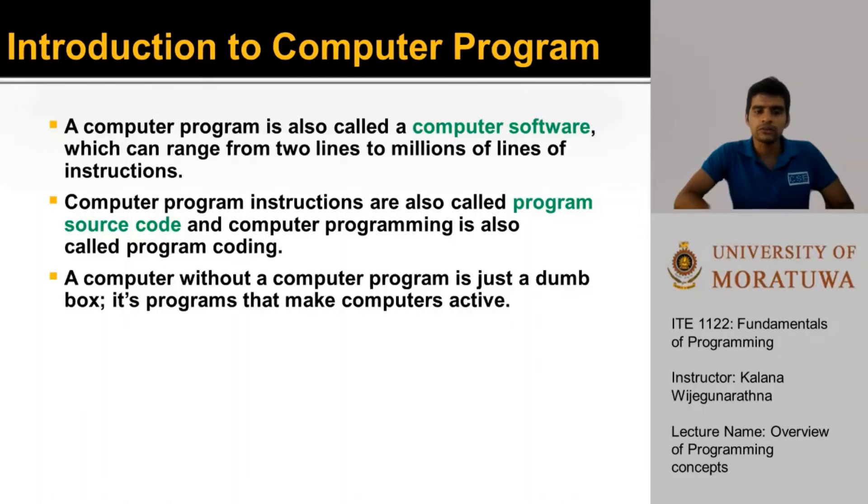Computer programs are also known as computer software. These programs can be a simple line displaying a line of text on the screen, or it can even be a large complicated program like a video game that you probably have played in your childhood. These programs can range from a few lines of code to millions of lines of code depending on the type and scale of the application we are building. Computer program instructions are also called program source code and computer programming is also called program coding.